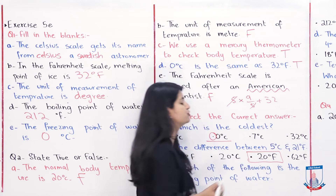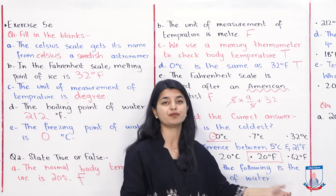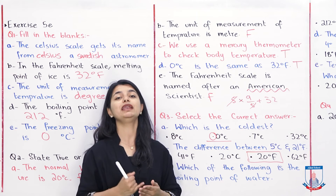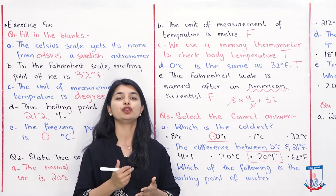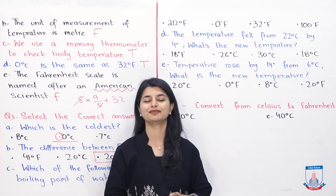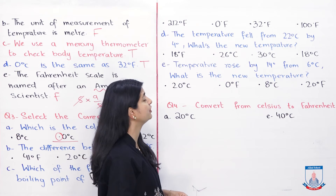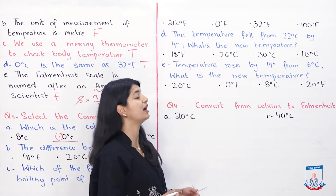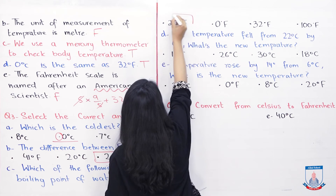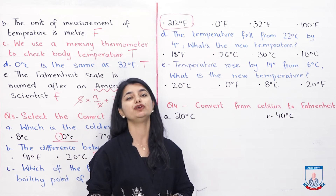We select 20 degrees Fahrenheit. Part C: which of the following is the boiling point of water? The boiling point is 100 degrees Celsius or 212 degrees Fahrenheit. Zero degrees Fahrenheit is not possible, 32 degrees Fahrenheit is the freezing point, and 100 degrees Fahrenheit is not the boiling point. So the correct option is 212 degrees Fahrenheit.